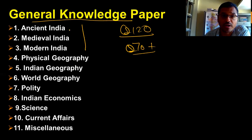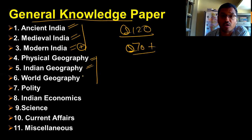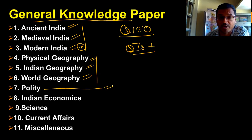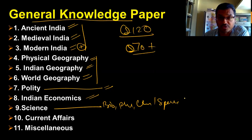The course covers three parts of History: Ancient History, Medieval History, and Modern History — with Modern History carrying more weight. Geography is divided into Physical Geography, Indian Geography, and World Geography. Then we cover Indian Polity and the Indian Constitution, Indian Economics, and Science subjects including Biology, Physics, Chemistry, Space Science, and Biotechnology.